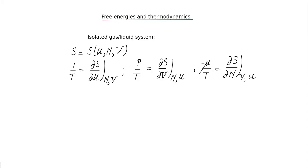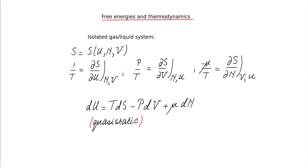For an isolated gas or liquid system, we have seen that we start from the entropy S as a function of U, N, and V — total energy, particle number, and volume. You can also use the energy U as a function of S, V, and N, as a function of entropy, volume, and particle number.